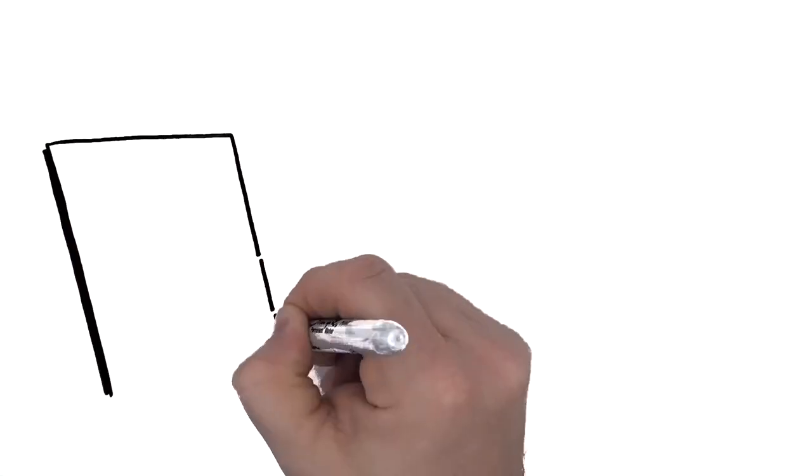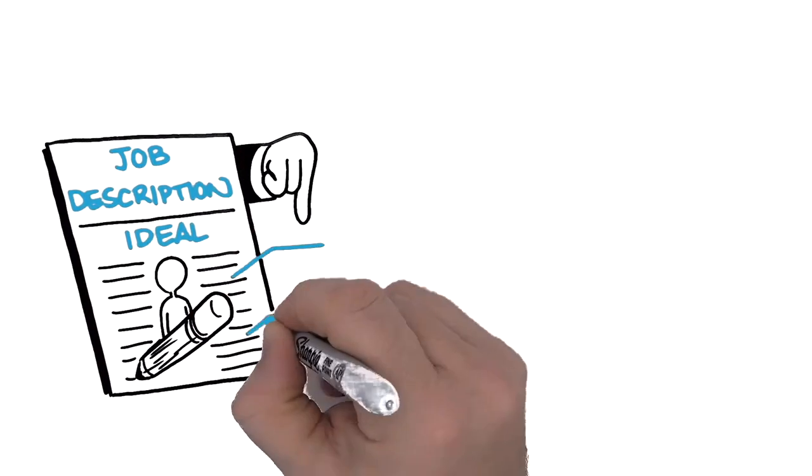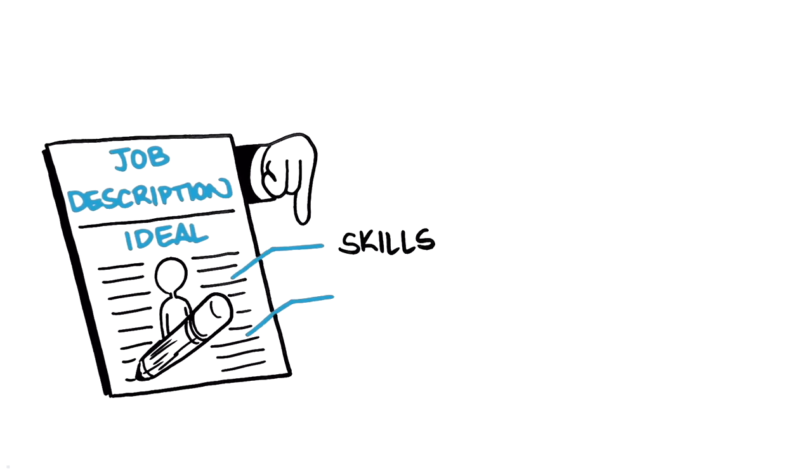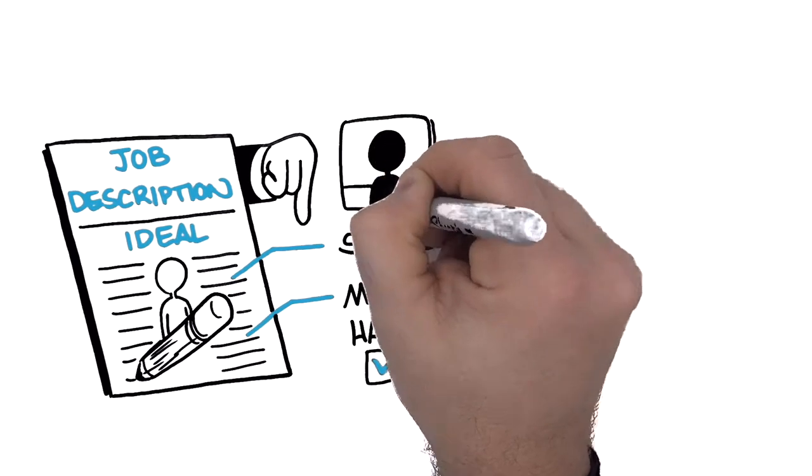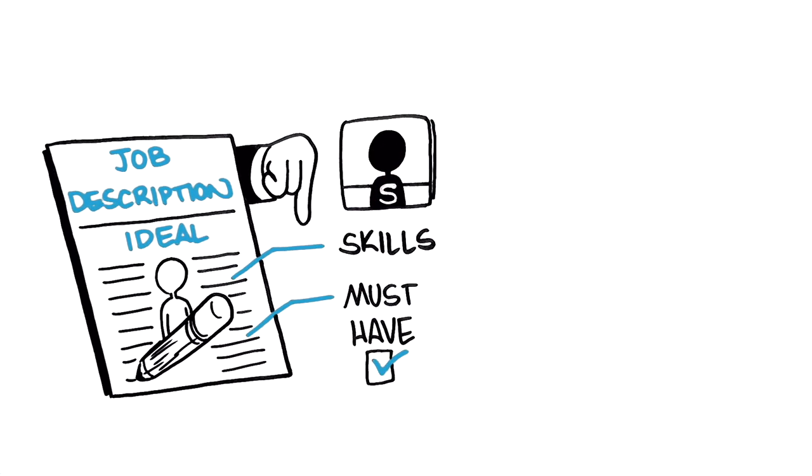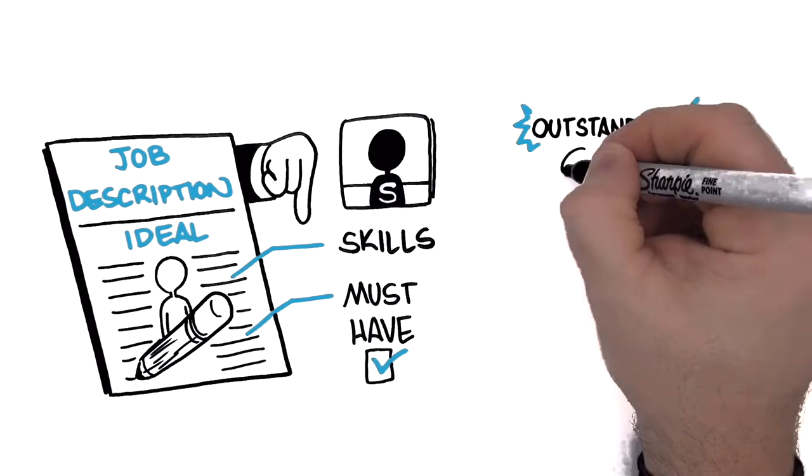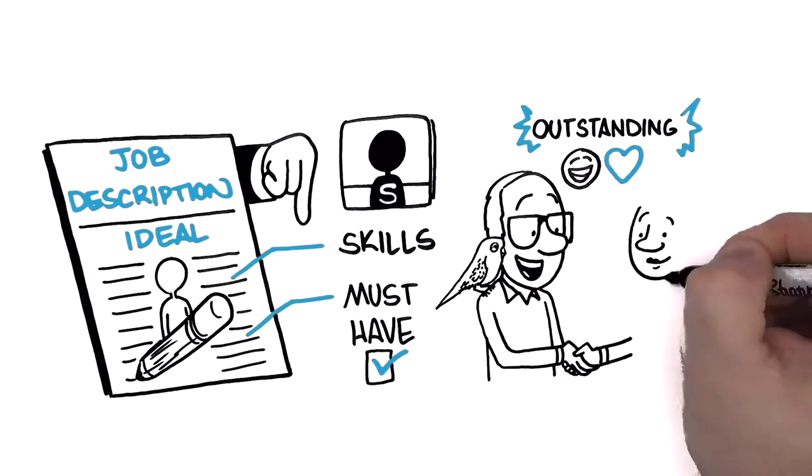Dan starts by writing a thorough job description in the present tense, which includes the skills the candidate will have to possess, along with his list of must-have qualifications. Dan doesn't forget to include the client service aspect of the job, which is to provide outstanding, friendly, and compassionate support to our clients.